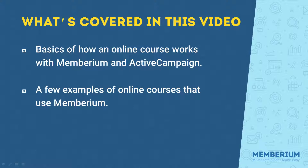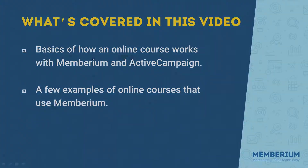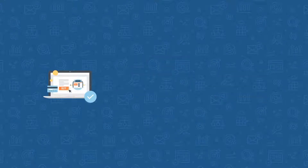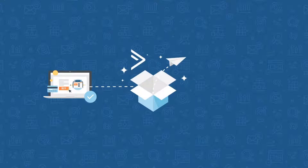You can also set it up to be paid for over multiple payments. That's all controlled by Active Campaign. The way that access to the online course works is very similar to the last video we just showed you — you have an order form that's embedded on your site, and when a customer submits the order...